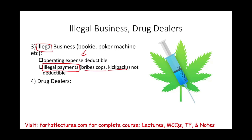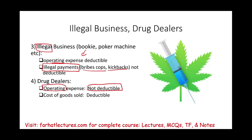What about drug dealers? If you are a drug dealer, operating expenses are not deductible — payments to dealers, transportation, cell phones, or other day-to-day operational costs cannot be deducted. However, cost of goods sold is deductible. So you take your income minus the cost of the drugs themselves, but running the business on a day-to-day basis is not deductible.